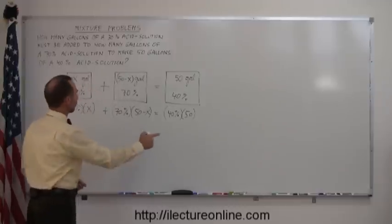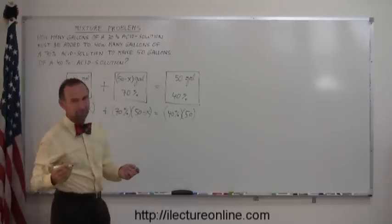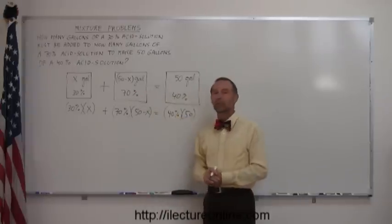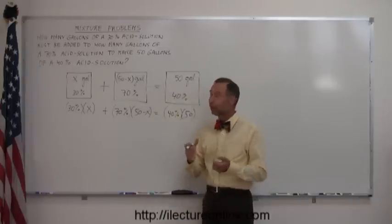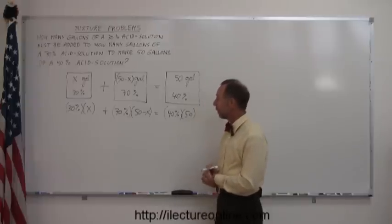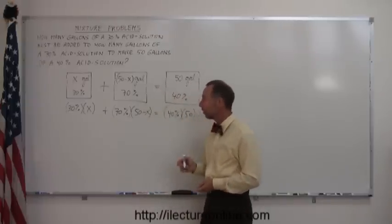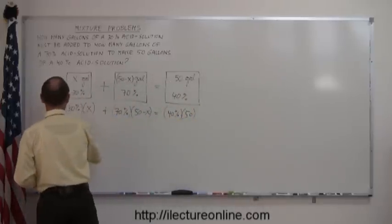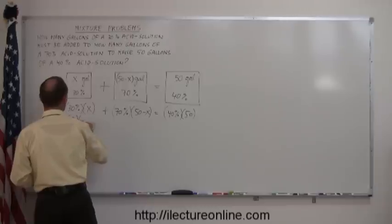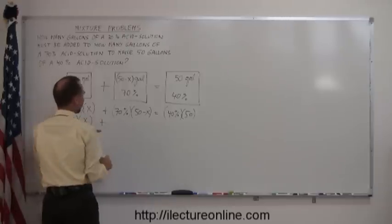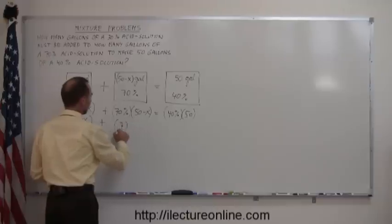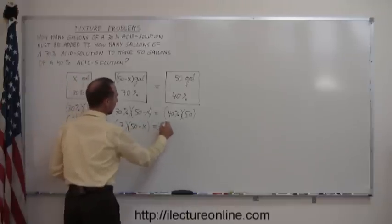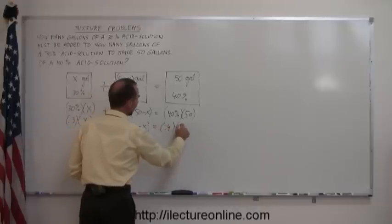And all we have to do now is solve this algebraically, like solving a linear equation to figure out how much of each solution we need. Alright, so now we just use our technique that we've learned before, of how to solve linear equations. First of all, we change the percentage into a decimal. So, 30% is the same as .3 times x, plus 70% is the same as .7 times 50 minus x, and 40% is the same as .4 times 50.